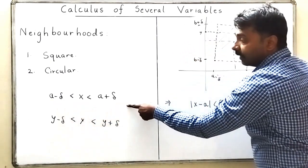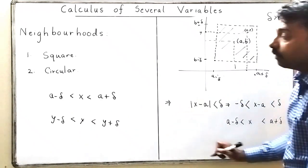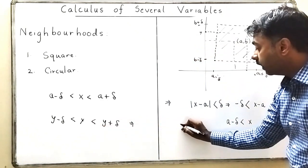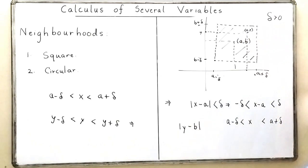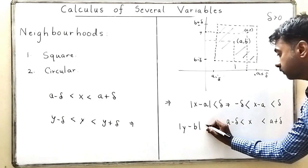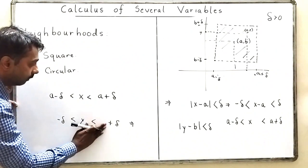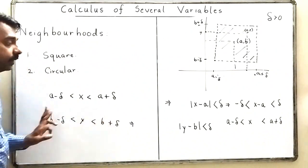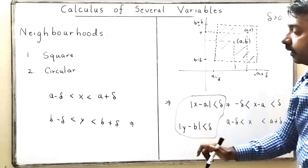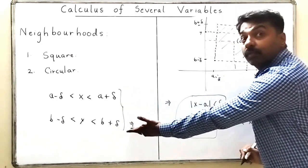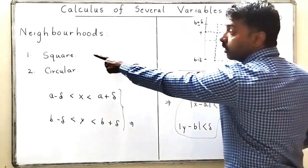So this inequality can be written as: modulus of x minus a less than delta. Similarly, for y, I can write: modulus of y minus b less than delta, which means y lies between b minus delta and b plus delta. These two inequalities together are called a square neighborhood.